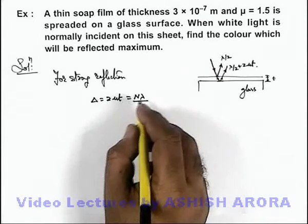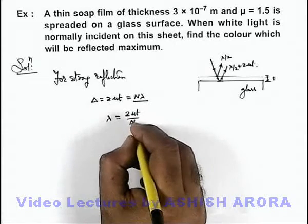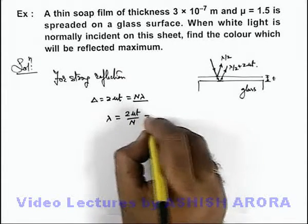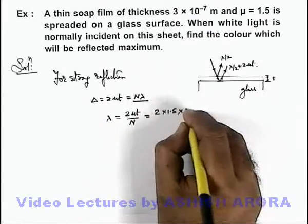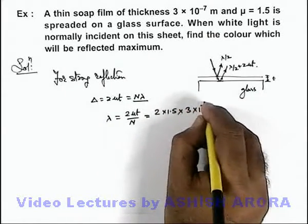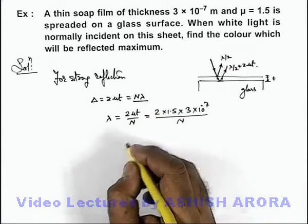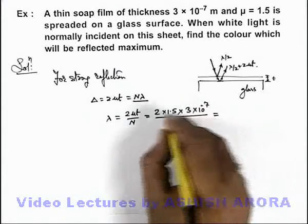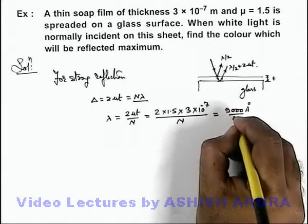So here the value of wavelength we can get is λ = 2μt/n. If we substitute the values, this will be 2 × 1.5 × 3×10⁻⁷ divided by n. On analyzing, we get this equals 9000 angstrom divided by n.